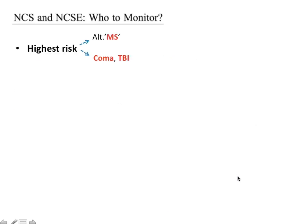Who should be monitored continuously in the ICU? The literature suggests that patients at highest risk for non-convulsive seizures or NCSE are those in altered mental status, in coma, or who have had traumatic brain injury. This subgroup benefits most from continuous EEG because underlying NCS or NCSE would otherwise be missed.